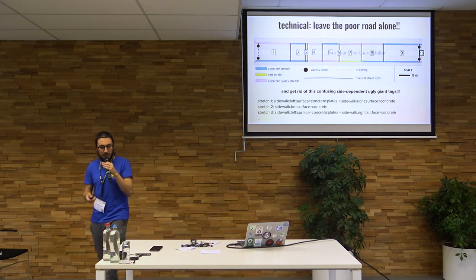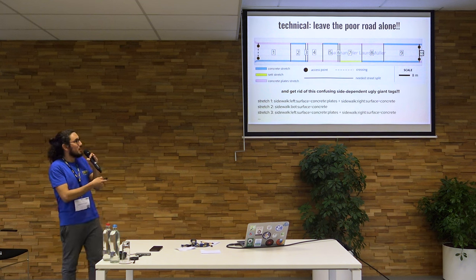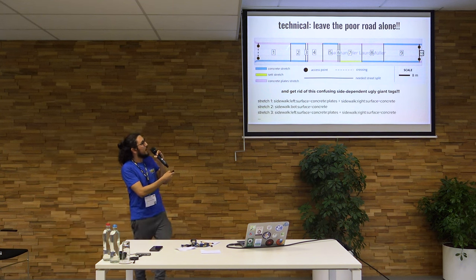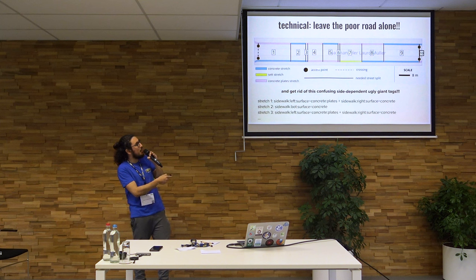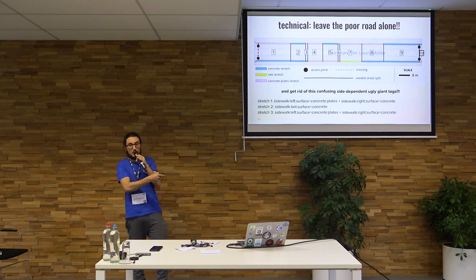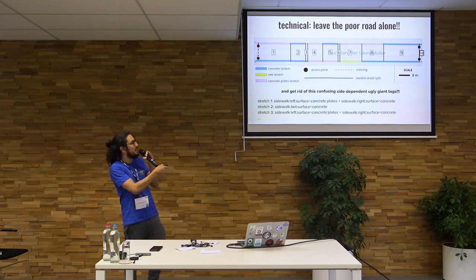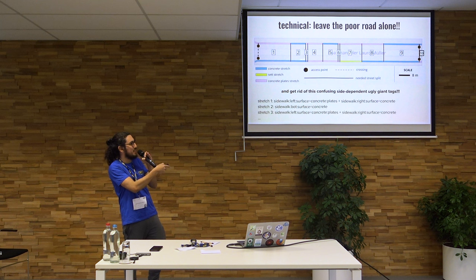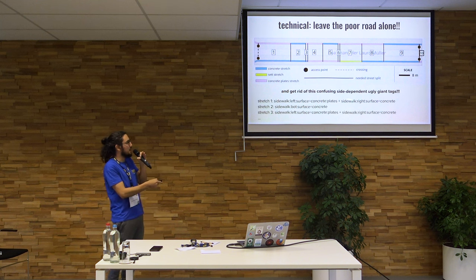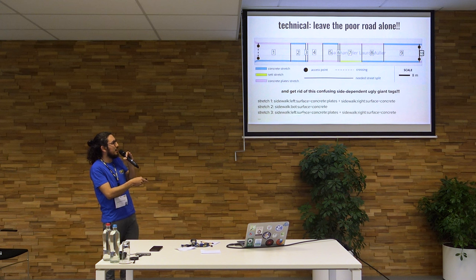Also, another important thing is to leave the road alone. If you imagine a situation where you have just a single road and the sidewalk surface is changing a lot, you would have to split it up — you would have like ten stretches of the street just to put the information about the sidewalk surface on the street. And you would end up with a very messy tag schema with big tags.